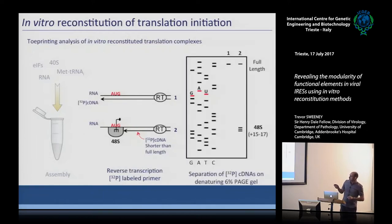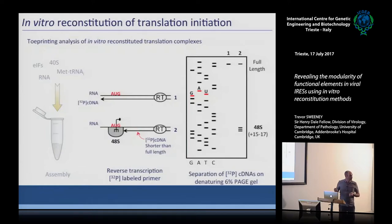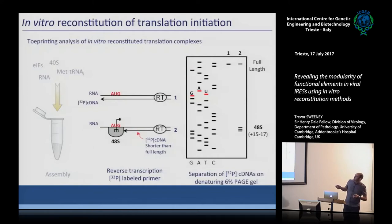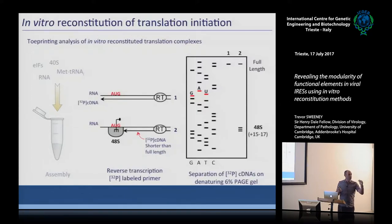This truncation is called a toeprint — it's where the ribosome is sitting on the RNA. The RT doesn't stop exactly at the ATG but some nucleotides downstream because part of the ribosome is protecting a section of the RNA. On a denaturing PAGE gel, the toeprint appears 15 to 17 nucleotides downstream from the ATG. When we see efficient translation, that's where we'll see the product.